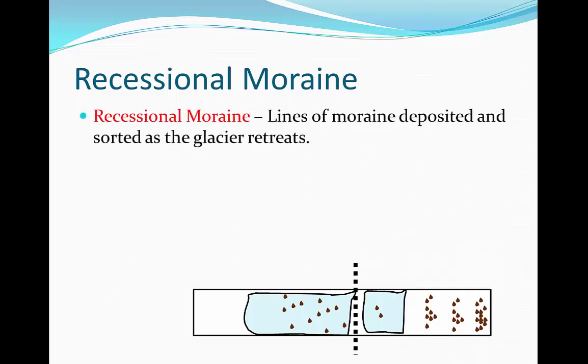Recessional moraine. Similar to terminal moraine, as you can see from the diagram, recessional moraine is the lines of moraine deposited and sorted as the glacier retreats.